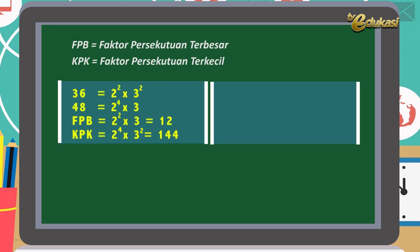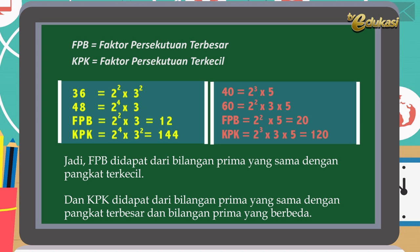Perhatikan contoh berikutnya. 40 sama dengan 2 pangkat 3 dikali 5. 60 sama dengan 2 pangkat 2 dikali 3 dikali 5. FPB sama dengan 2 pangkat 2 dikali 5 sama dengan 20. KPK sama dengan 2 pangkat 3 dikali 3 dikali 5 sama dengan 120. Coba anak-anak, bisa tidak kalian menyimpulkan bagaimana mencari FPB dan KPK? Jadi, FPB didapat dari bilangan prima yang sama dengan pangkat terkecil. Dan KPK didapat dari bilangan prima yang sama dengan pangkat terbesar dan bilangan prima yang berbeda.